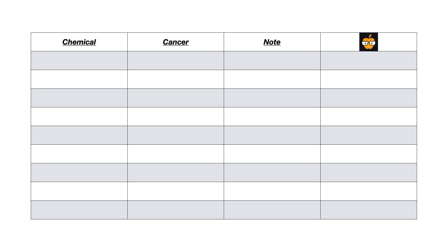Today's video is on carcinogenic chemicals. I think the best way to approach them is with a table. I'm generally not a big fan of tables because I find them difficult to memorize, but this is an exception because there are about 10 different chemicals that cause different cancers that you need to know. As I fill in this table, I'll stress what's important and high yield for the USMLE and medical school exams. I'll list the chemical, the cancer it causes, miscellaneous notes, and a mnemonic where applicable. Let's get started with aflatoxin.